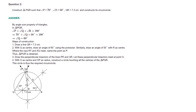Now coming to question number 2. Construct triangle PQR such that measure of angle P is equal to 70 degrees, measure of angle R is equal to 50 degrees, QR is equal to 7.3 cm, and construct its circumcircle. The base is QR, but we are only given the measure of angle R, not angle Q. We need both base angles to construct the triangle, so using the angle sum property: angle P + angle Q + angle R = 180°. Substituting the known values, you will get measure of angle Q to be 60 degrees.